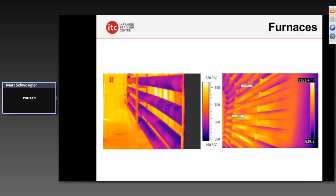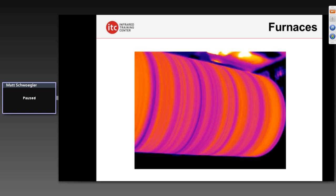Your typical long-wave camera would not be able to do this because the flame is in the way. But in the mid-wavelengths with the right type of filter, we can actually see through the flame — it effectively removes the fire from the frame — and we can clearly evaluate the surface temperatures and patterns on these tubes inside the furnace, including the efficiency of the burners.